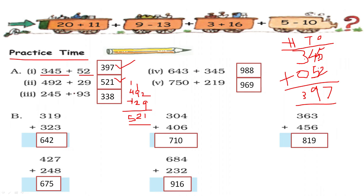Similarly, add 245 plus 93. 5 and 3 add to 8. 4 and 9 add to 13 — 1 carry. 2 plus 1 is 3. So 338. Then add the next problem: 9 plus 3 is 12 — 1 carry. 2 plus 1 is 3, plus 1 is 4. 3 plus 3 is 6. So 642.